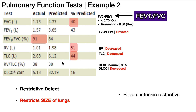We're going to look at two examples and in each case we're going to be given values obtained from spirometry. We see here FVC, FEV1, the ratio of the two, residual volume, total lung capacity, the ratio of those two, and something called the DLCO. Let's briefly talk about what each of these values is and then we'll talk about how to analyze and solve the problem.